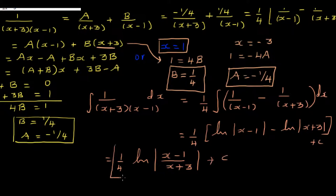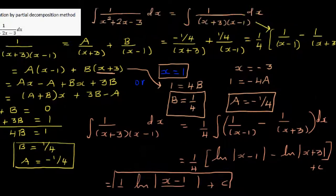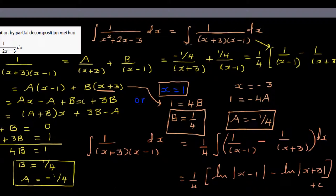To confirm the integration is correct, you can differentiate the result. To differentiate the natural log of (x minus 1) over (x plus 3), use the chain rule with the quotient rule on the inside. Simplifying will return the original integrand 1 over (x squared plus 2x minus 3).